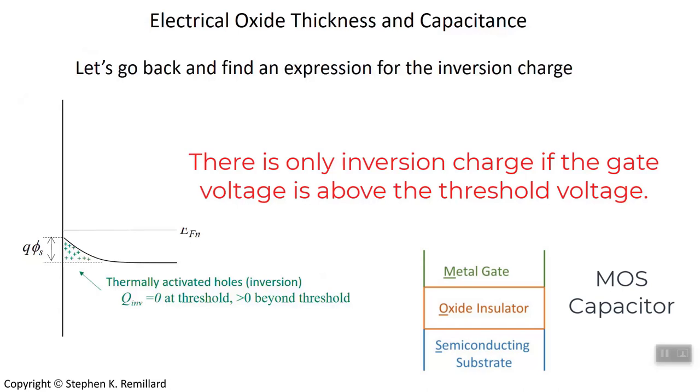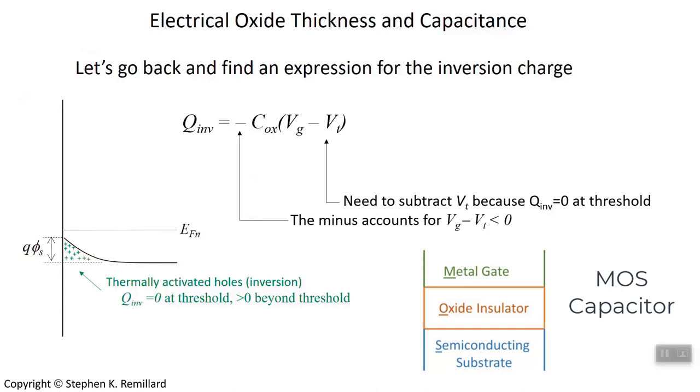Let's use the definition of capacitance, Q equals CV, to relate the inversion charge to the voltage. If the inversion charge is zero when gate voltage equals the threshold voltage, you're at threshold.